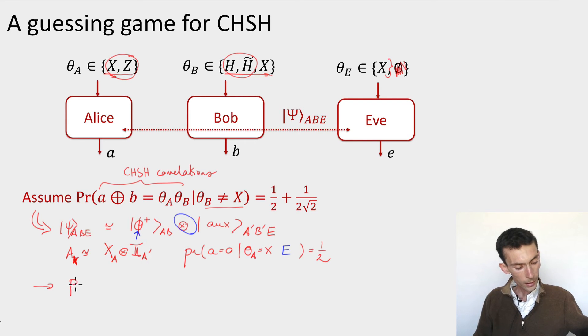Alice's output is uniformly distributed. Which means that the probability that Eve can guess Alice's output, given she knows that the input for Alice was an X, and her system, then this is a half. She cannot guess better than random.